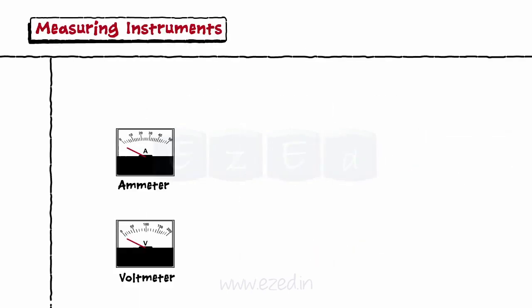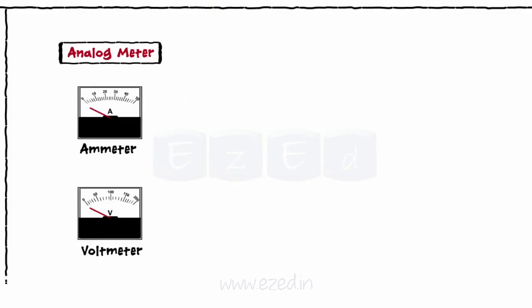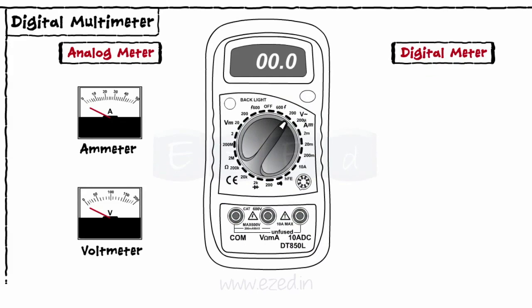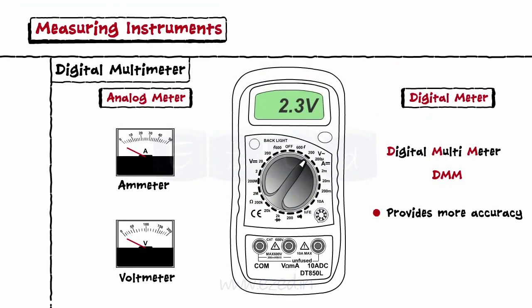The meters that we studied till now were analog meters. Now, we will study a digital meter which can be used for multiple purposes. Hence, it is called a digital multimeter, or DMM. The output being digital, DMM provides more accuracy than analog meters.